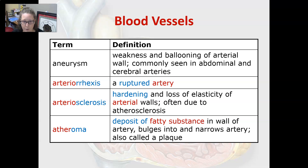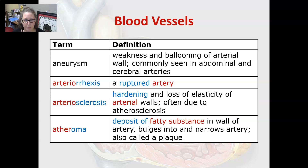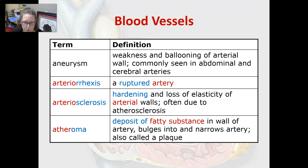Arteriorexis is a ruptured artery, which is what can happen with an aneurysm. Arteriosclerosis is the hardening and loss of elasticity of arterial walls, often due to atherosclerosis — the fatty plaque accumulating in arteries. An atheroma is a deposit of fatty substance in the wall of an artery — essentially plaque — that bulges into and narrows the lumen of the artery.